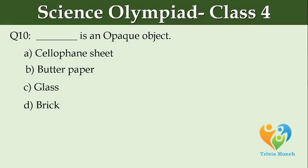Dash is an opaque object. Option A: cellophane sheet. Option B: butter paper. Option C: glass. Option D: brick.